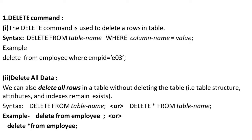The DELETE command can be used in a table. If we want to delete a particular record in a table, then we can use the DELETE command. The syntax is: DELETE FROM table_name WHERE column_name = value semicolon. This will delete that particular record.